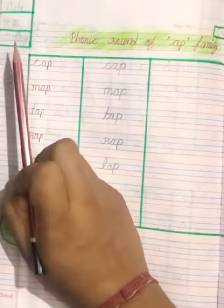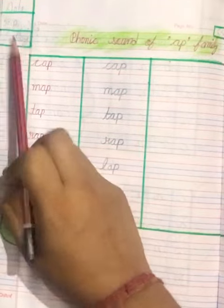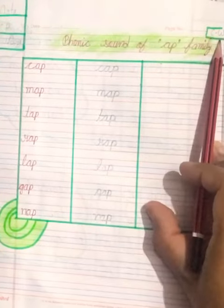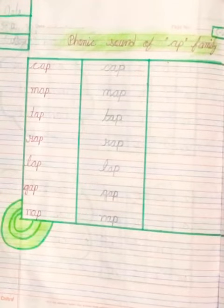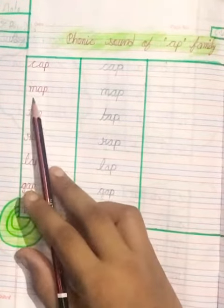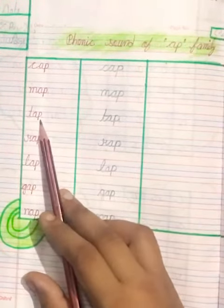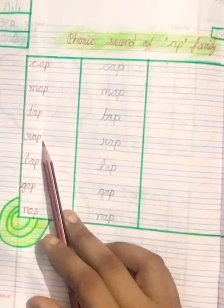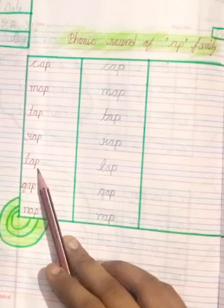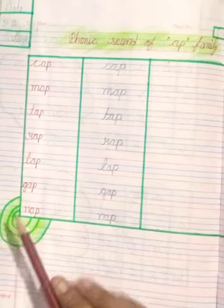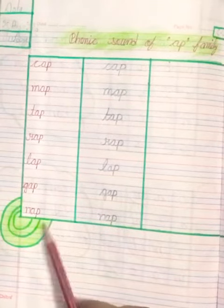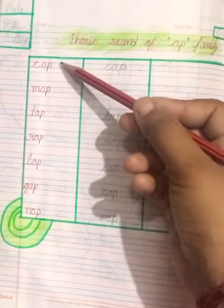And the day is Tuesday, so write down Tuesday spelling and also write down CW. And today's topic is phonics sound of 'ap' family. So: cap, map, tap, rap, lap, gap, nap. So students, do as it is, same.